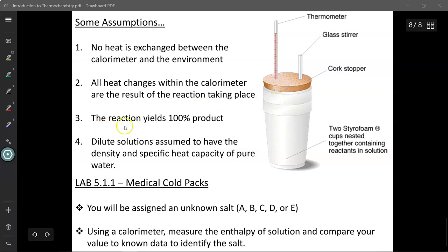Now, the third assumption we make is to assume that the reaction itself yields a 100% product. Obviously, that's not true. Percentage yields will change depending on the chemical reaction. But we're going to assume that 100% of the product is being produced in order to simplify our calculations.